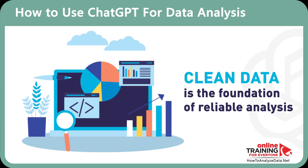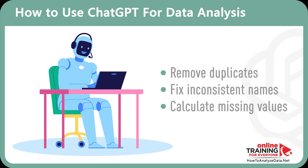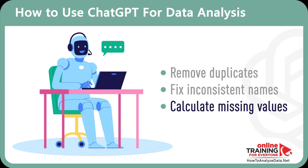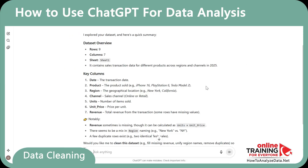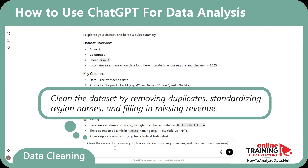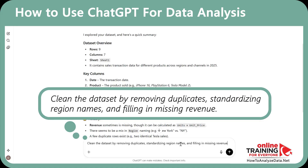What's cool about ChatGPT is that with a single prompt, it can remove duplicates, fix inconsistent region names like NY vs. New York, or even calculate missing revenue values. Here's how you would do it: 'Clean up the data set by removing duplicates, standardizing region names, and filling in missing revenue.'